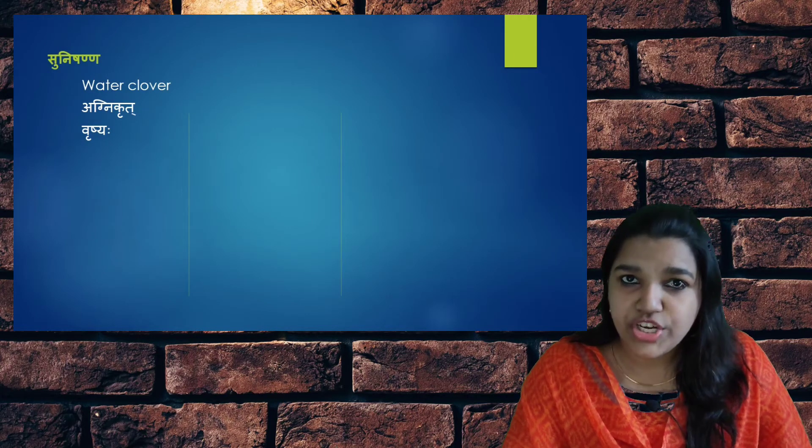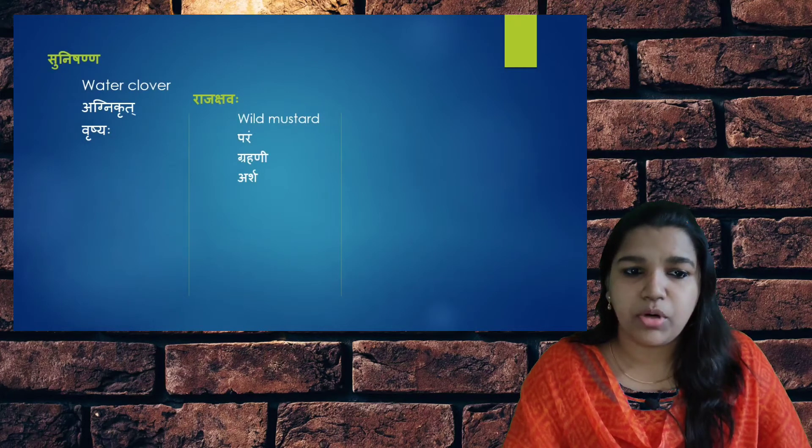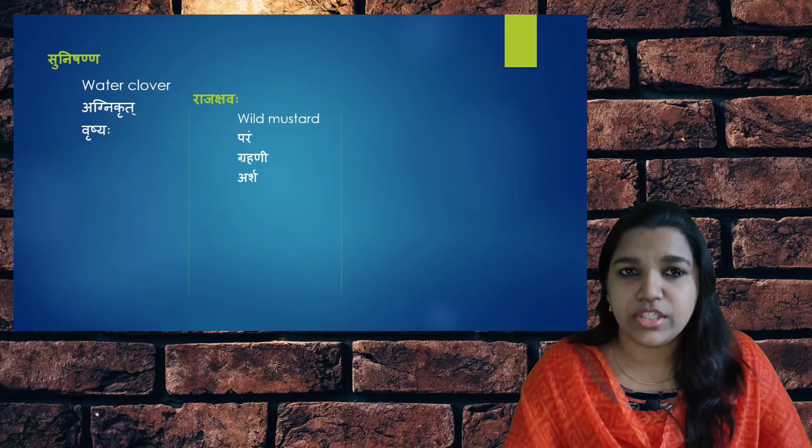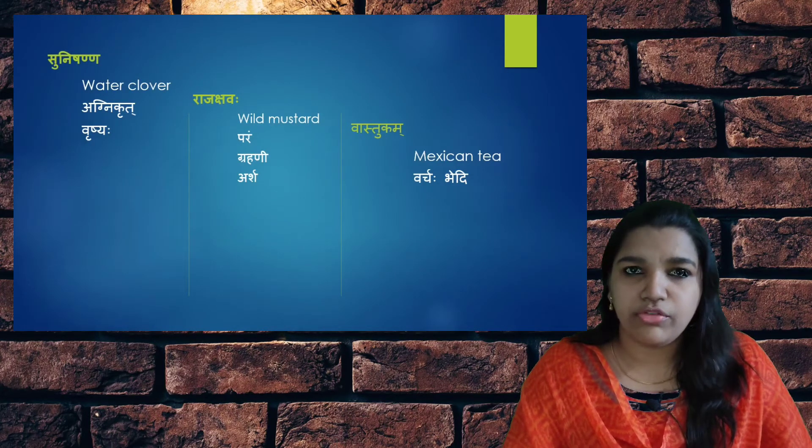Sunishanna is Aknikrit — that is, it helps in Agni Deepti or increases the digestive power — and it is Vrishya, that is Aphrodisiac. Rajakshava is the best among these properties in this Shaka Varga and it is Grahani and Arshokna — that is, it helps in reducing the conditions such as Grahani and Arsha. Vastukam is Varchaha Bhedhi, that is it helps in promoting loose motions or for the Virechana Karma.